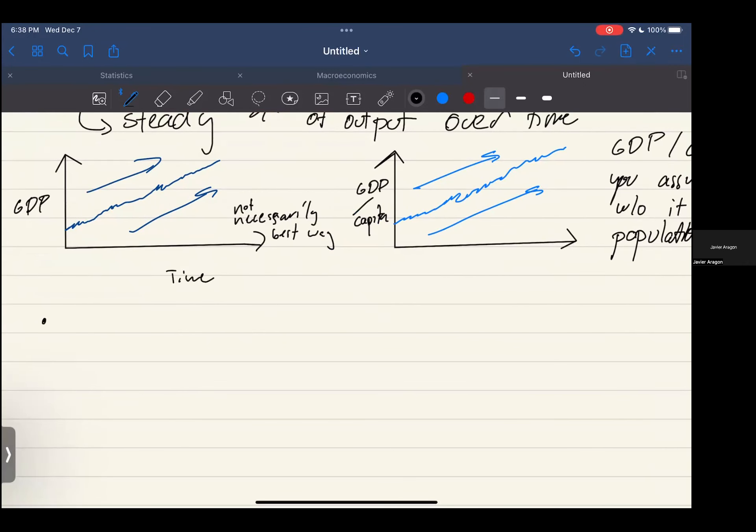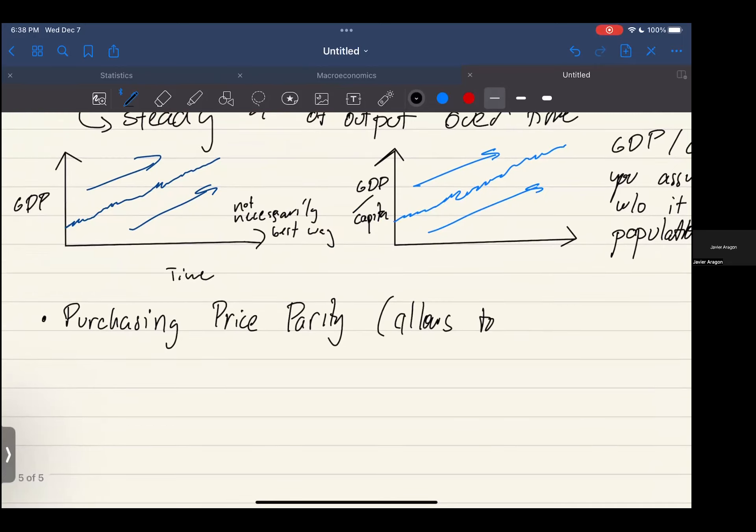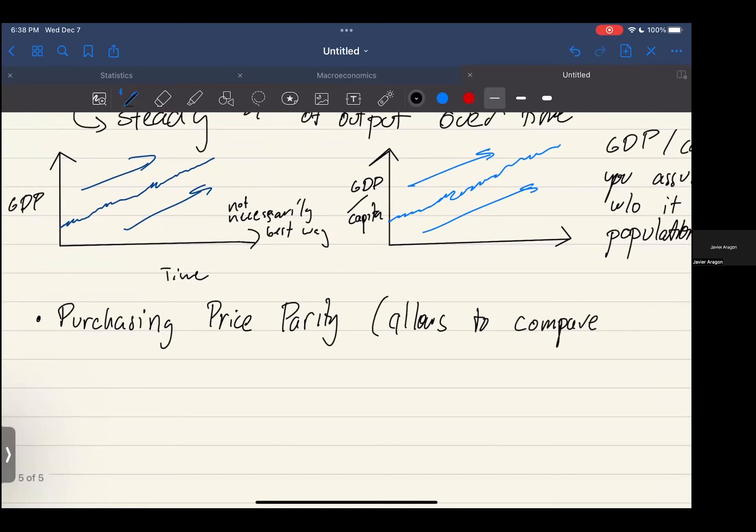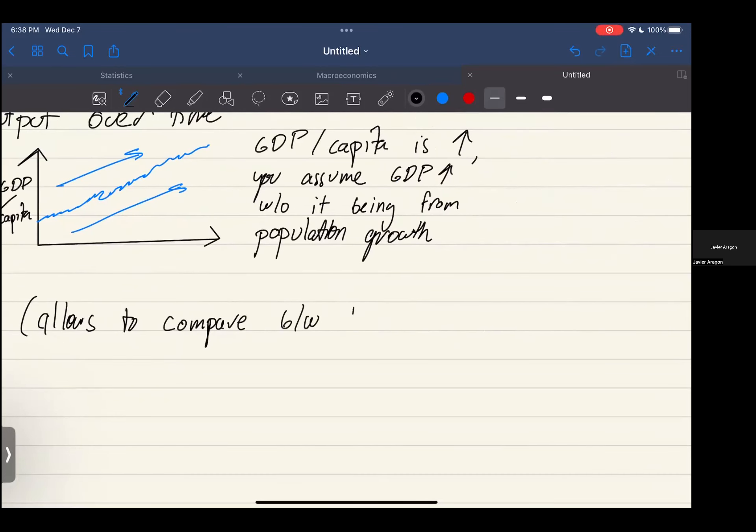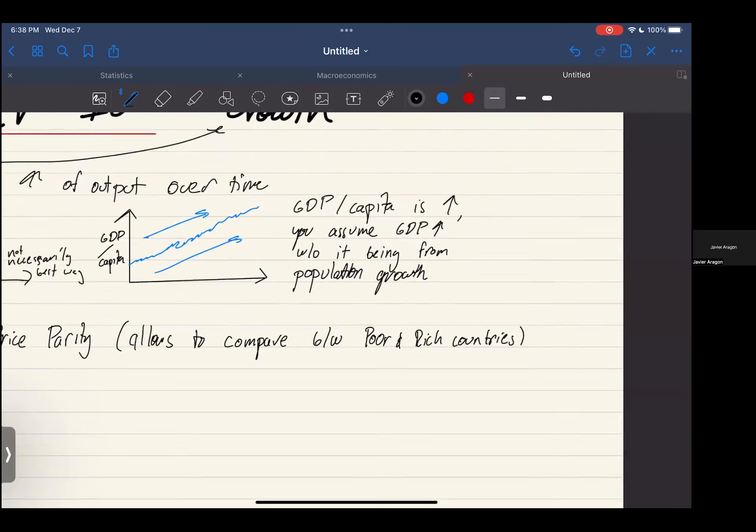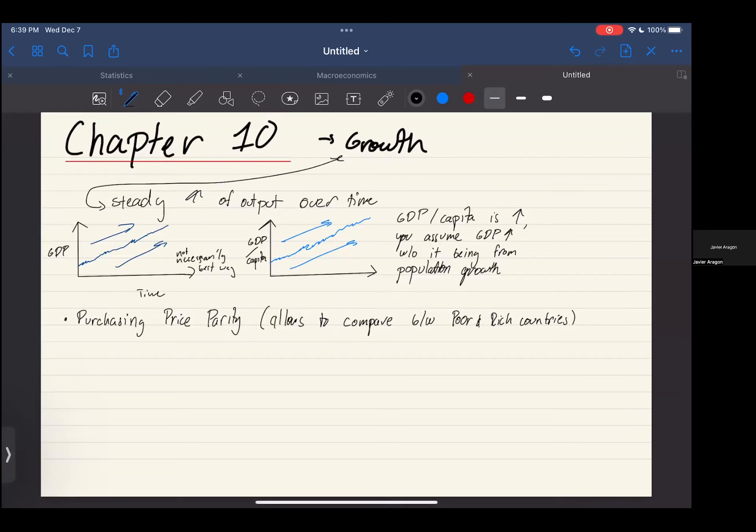This correction is called purchasing price parity, and this allows you to compare between poor and rich countries.